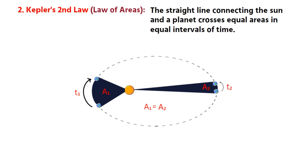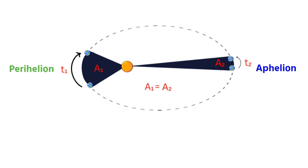As we already know, the point where the planet is closest to the sun is called the perihelion, and the point where the planet is farthest from the sun is called the aphelion. Hence, by Kepler's second law, we can clearly understand that the planet moves fastest when it is at perihelion, and slowest when it is at aphelion.